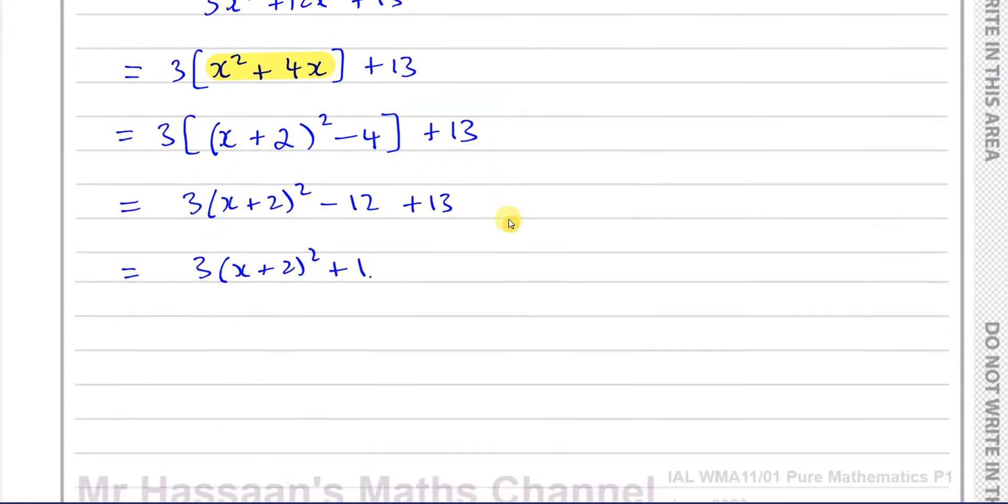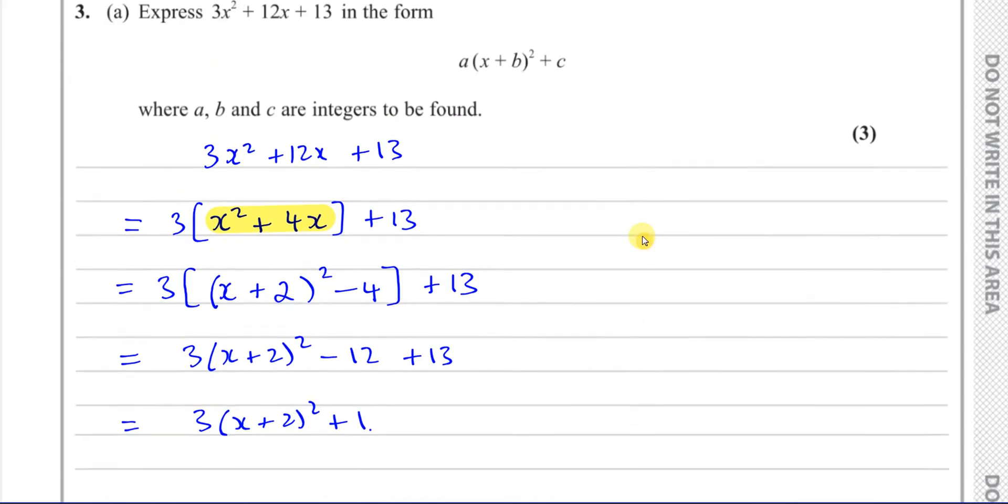You don't have to state that, unless it says state the values of a, b, and c. Here, this is the right form. That's the answer. That's fine. So there's 3 part a done.